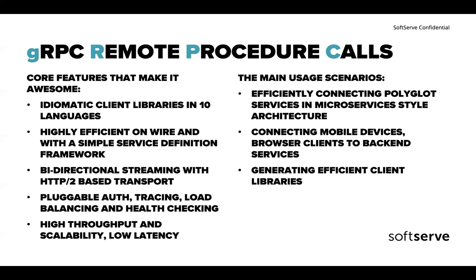Main user scenarios: generating client libraries is great, but efficiently connecting many things in your environment — multiple services communicating with each other — is the core use case. Connecting mobile devices, browser clients, and backend services can also work. Mainly it's about sending lots of data with high throughput, easy scalability, and low latency. You won't use it for client-facing APIs where you just want something easy to understand.